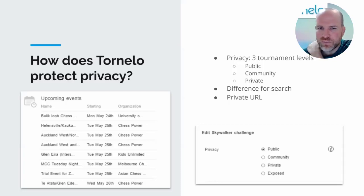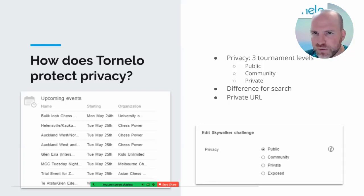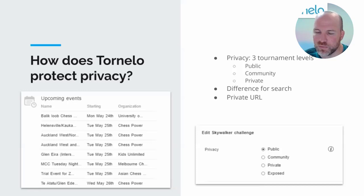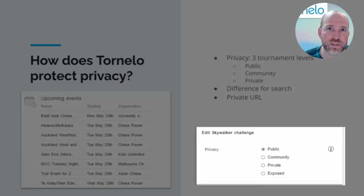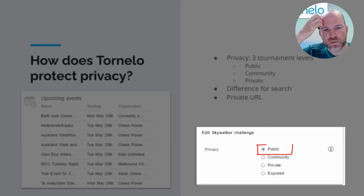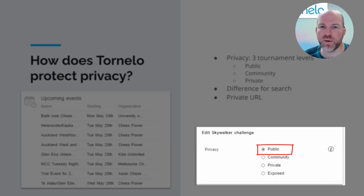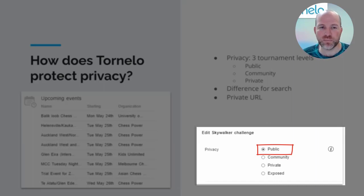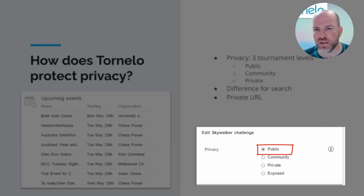Those three different levels are public, community, or private. For a tournament, these levels relate to the ability to find that tournament. If you're a public tournament, your tournament can be found by anybody in the world, including Google search spiders and robots. Your tournament will be crawled by Google and archived — it's completely public, visible everywhere.